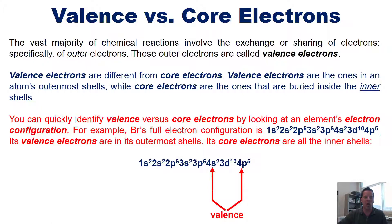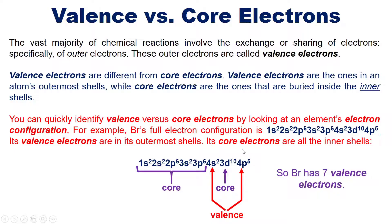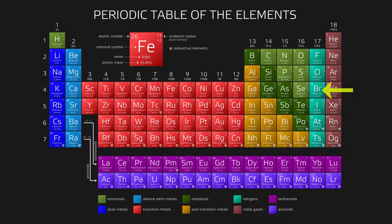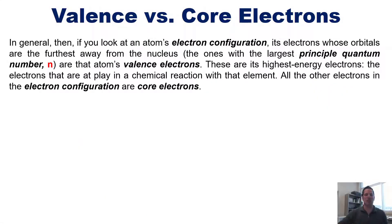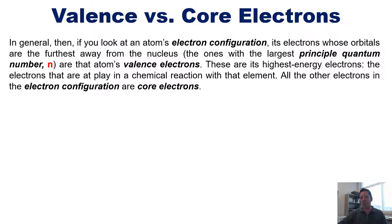All of the other electrons — including the d electrons — are core electrons for bromine. Adding 2 (from 4s2) and 5 (from 4p5), bromine has 7 valence electrons, which matches its position in column 7 of the periodic table. In general, the electrons with the largest principal quantum number n are the valence electrons — the highest energy electrons involved in chemical reactions.